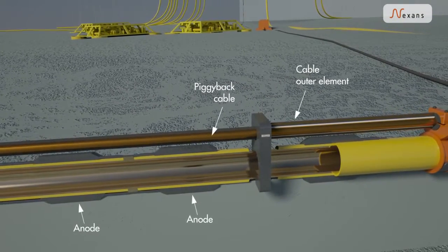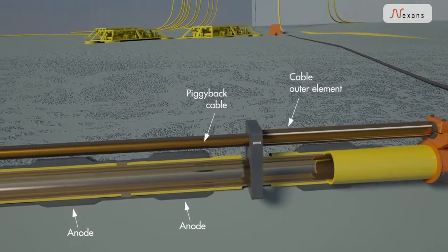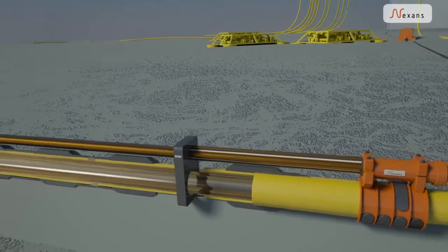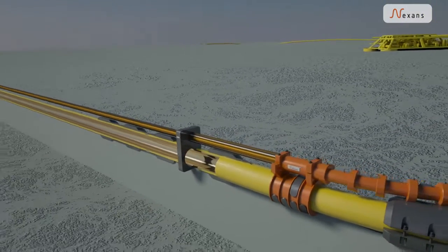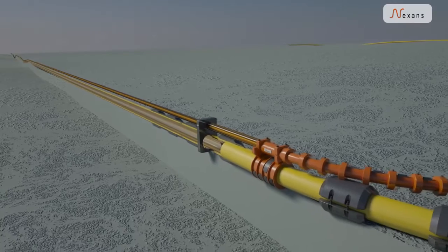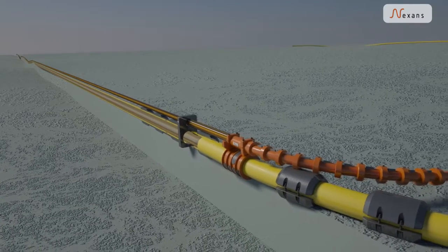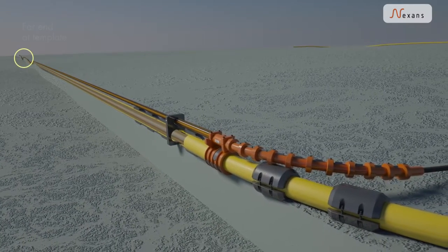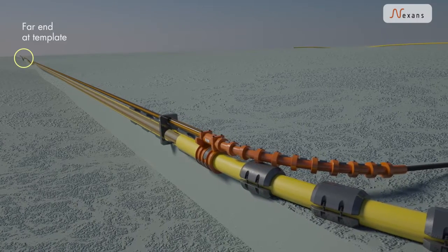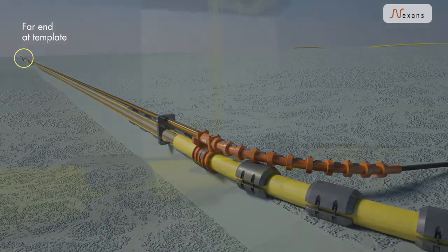Anodes connect the pipeline to the seawater. Pipelines from an oil well template to the riser area beneath a surface installation can stretch from a few kilometers up to typically 100 kilometers.